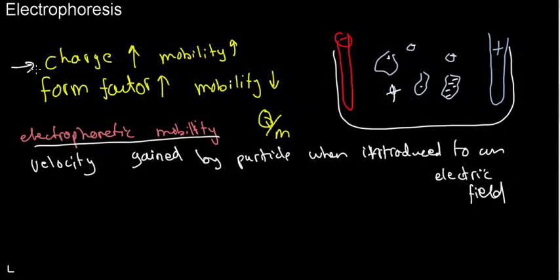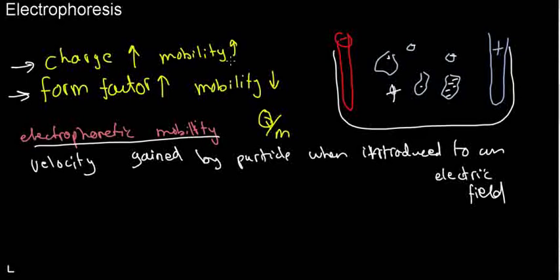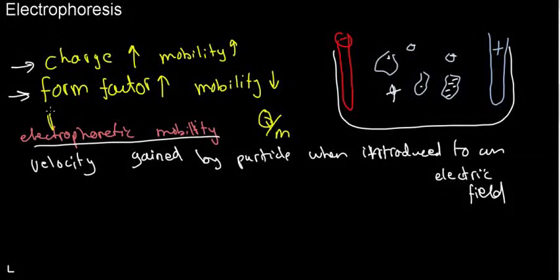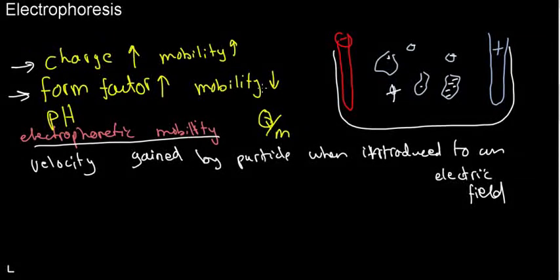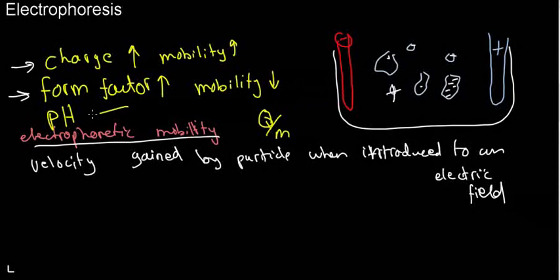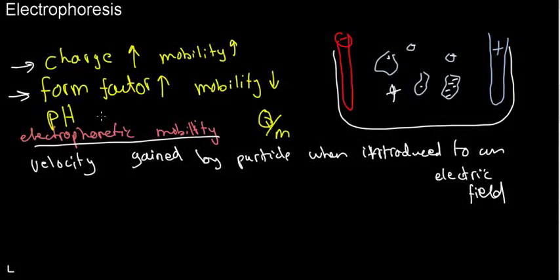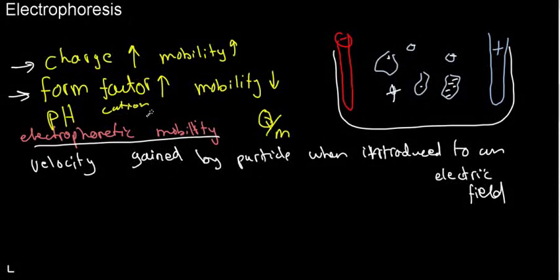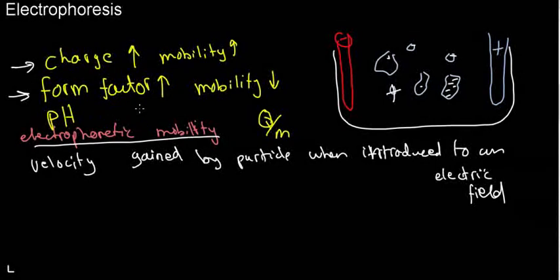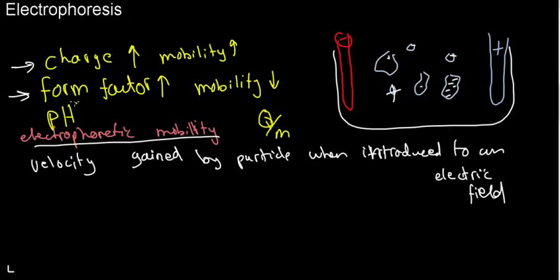One more thing that may affect electrophoretic mobility is pH. pH affects electrophoresis because different proteins have different ionic forms — cations or anions — at different pH levels. A molecule at a certain pH may be a cation, and when the pH changes drastically it turns into its anion form, due to the carboxylic and amino terminals. All you really need to know is that pH does make a difference in electrophoresis.